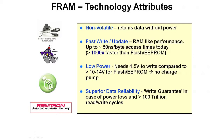FRAM technology attributes match directly with those requirements. FRAM is non-volatile — it retains its data without power. It has fast writes and updates with RAM-like performance, up to about 50 nanoseconds per byte access time today, which is more than a thousand times faster than flash or EEPROM. It needs only 1.5 volts to write, compared to 10 to 14 volts for flash or EEPROM, meaning no charge pump is required. It offers superior data reliability, a write guarantee in case of power loss, and greater than 100 trillion read and write cycles.